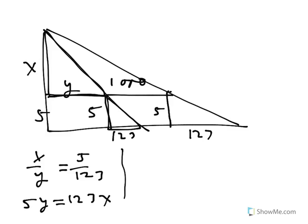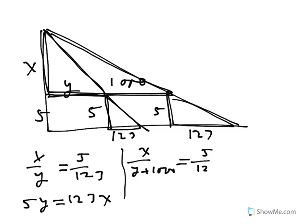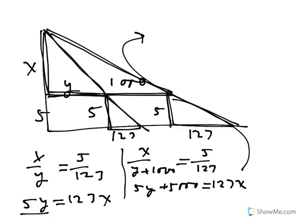We also have this right triangle. We can say x over y plus a thousand is similar to this guy, with the 5 and the 127. Cross multiply, get 5y plus 5,000 equals 127x. I'll just move over here for it, since they both have, I'll bring this 5,000 to the other side, 5y equals 127x minus 5,000.